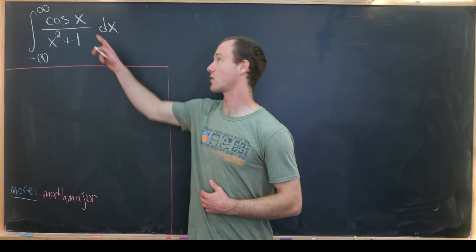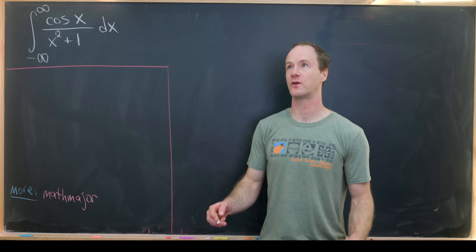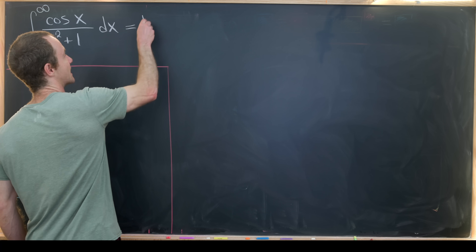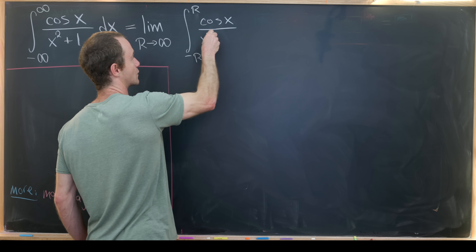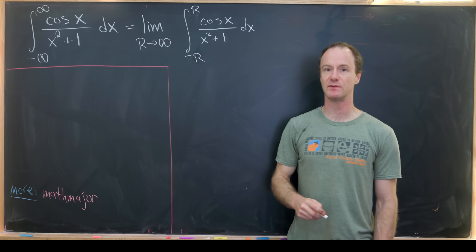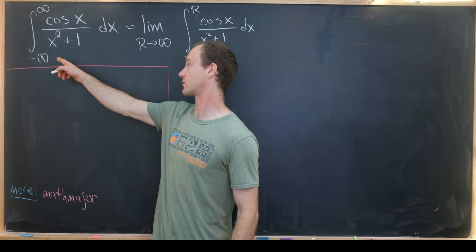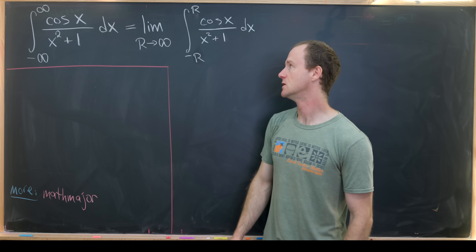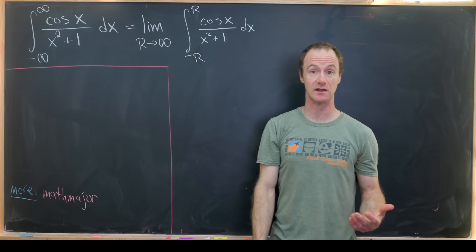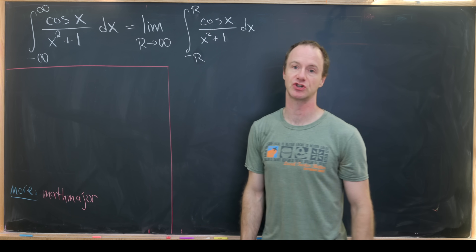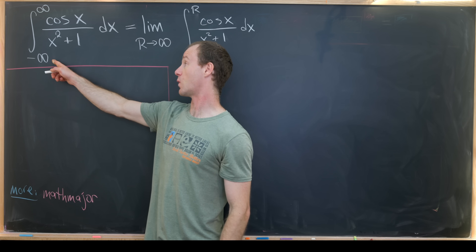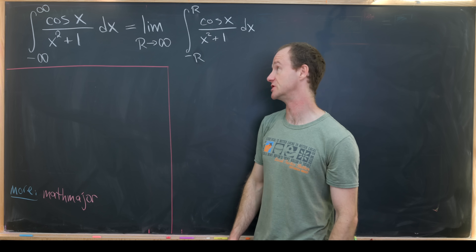We're going to start by writing this improper integral as the limit of an integral over a finite region. We'll write it as the limit as capital R goes to infinity of the integral from minus R up to positive R of cosine x over x squared plus one dx. This might seem worrying because generally with improper integrals infinite in both directions we can't write a single limit — but since we have an even function, this integral equals twice the integral from zero to infinity, so it's actually legitimate here.